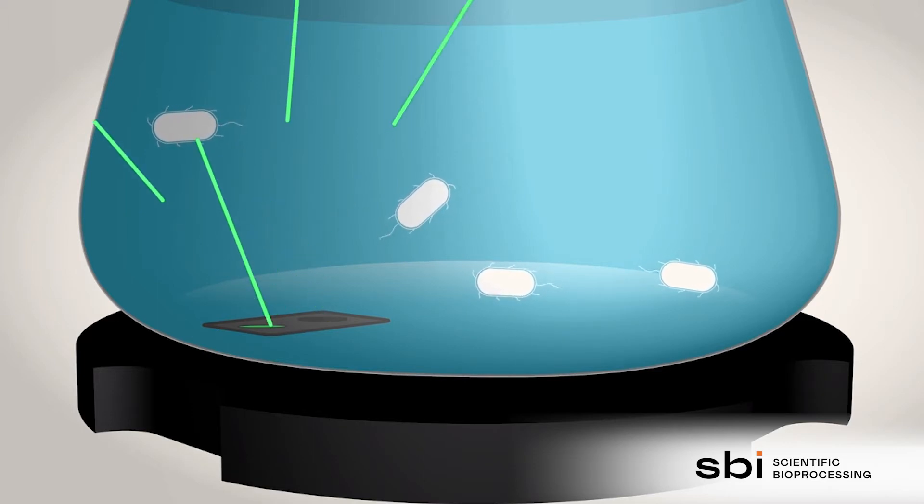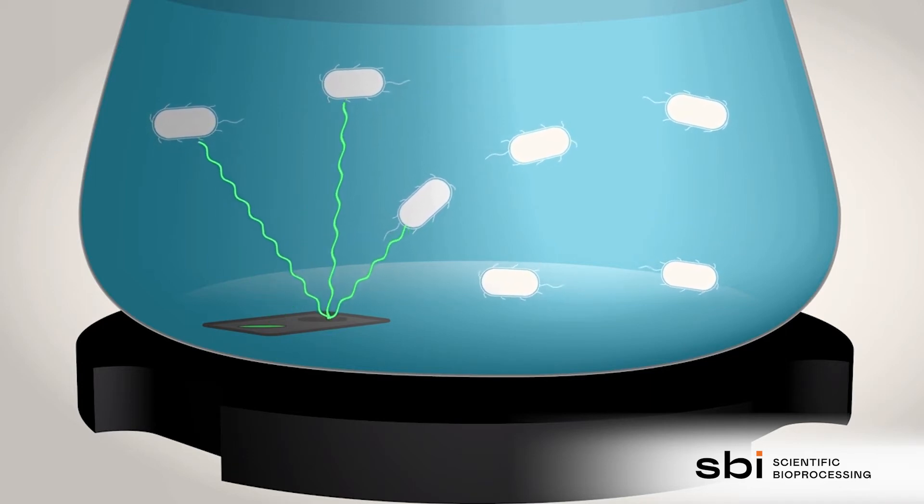The higher the concentration of microorganisms in the media, the higher the intensity of the backscattered light. This principle of measurement enables the CGQ to monitor the growth of the culture in real time.